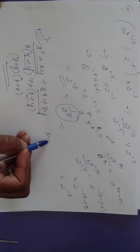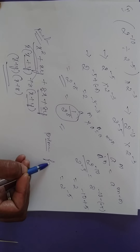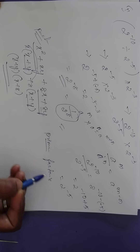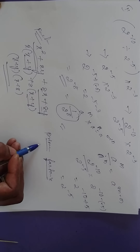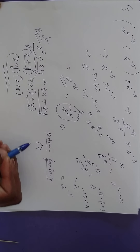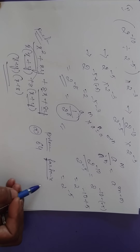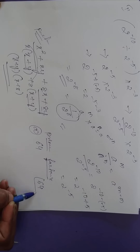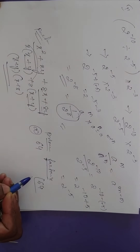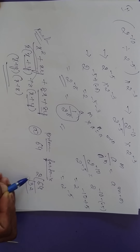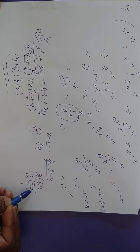Now, the prime factorization method. For example, 64 is given. Divide by the smallest prime number, which is 2: 2 times 32 is 64, 2 times 16 is 32, 2 times 8 is 16, 2 times 4 is 8, 2 times 2 is 4, 2 times 1 is 2 — and 1 is left.